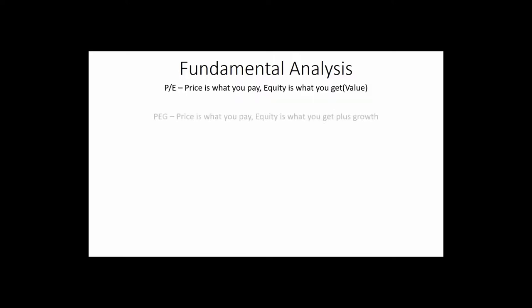We talked about the price-to-earnings ratio — the PE ratio. Price is what you pay and equity is what you get, or the value. We use this to determine whether it's a good time to buy a particular company or not. If you've got a really high PE, chances are you're paying a lot for earnings, and that's not always the best thing, so we want to compare similar companies to find out which one's best.